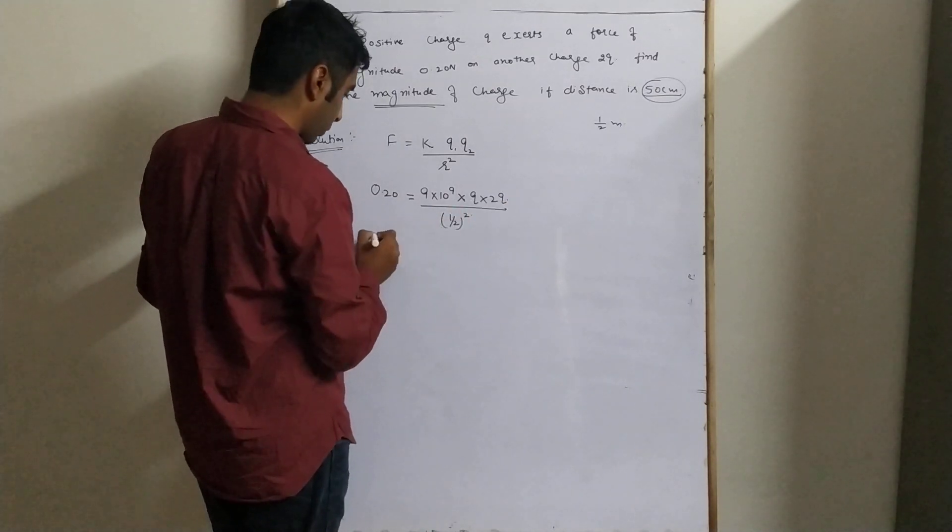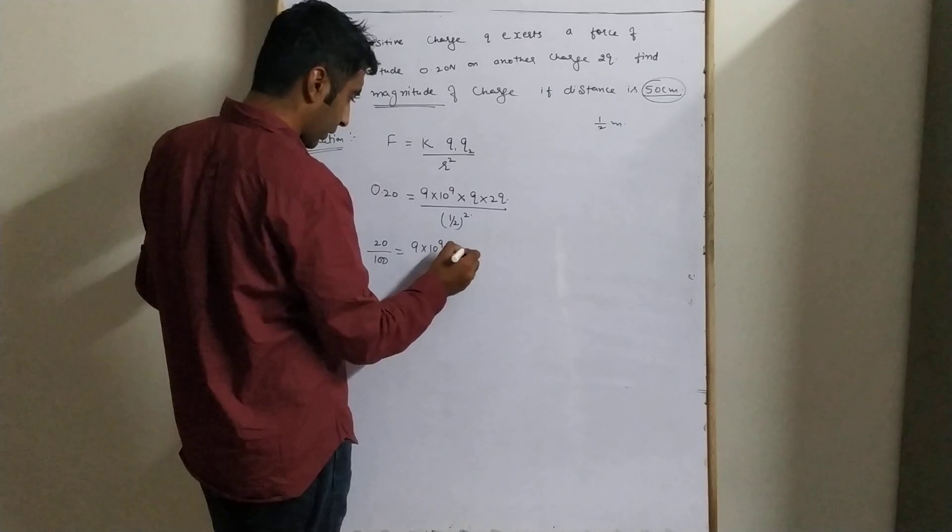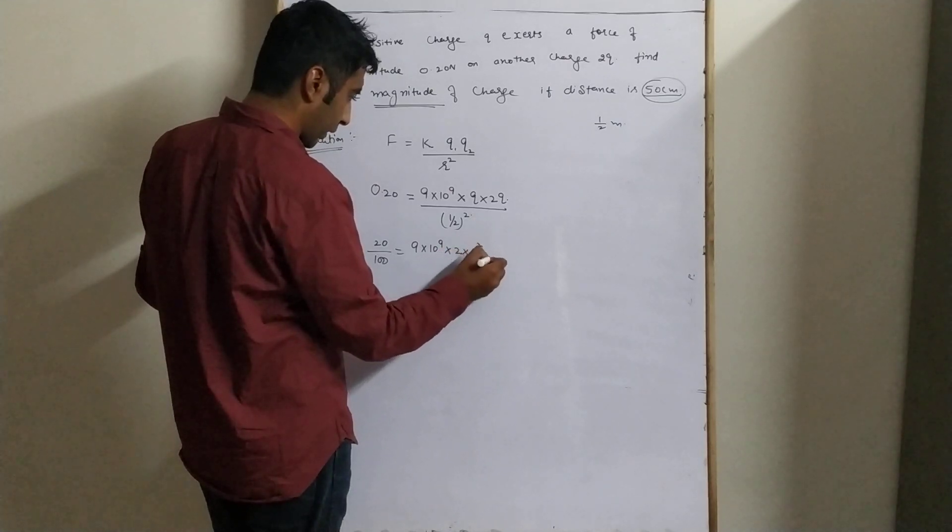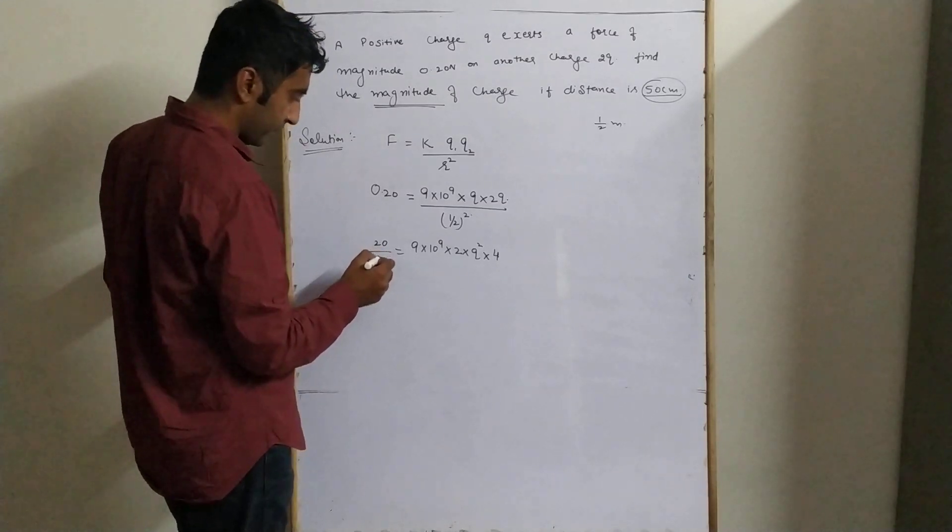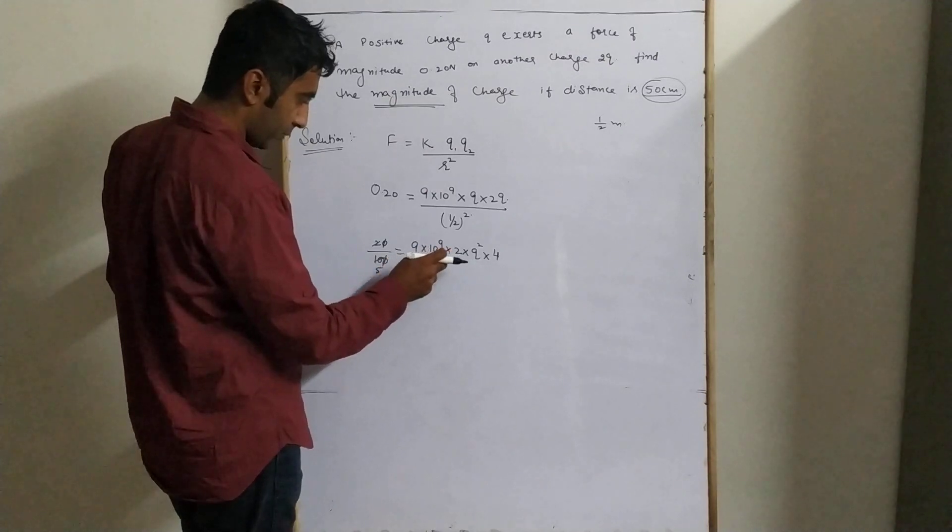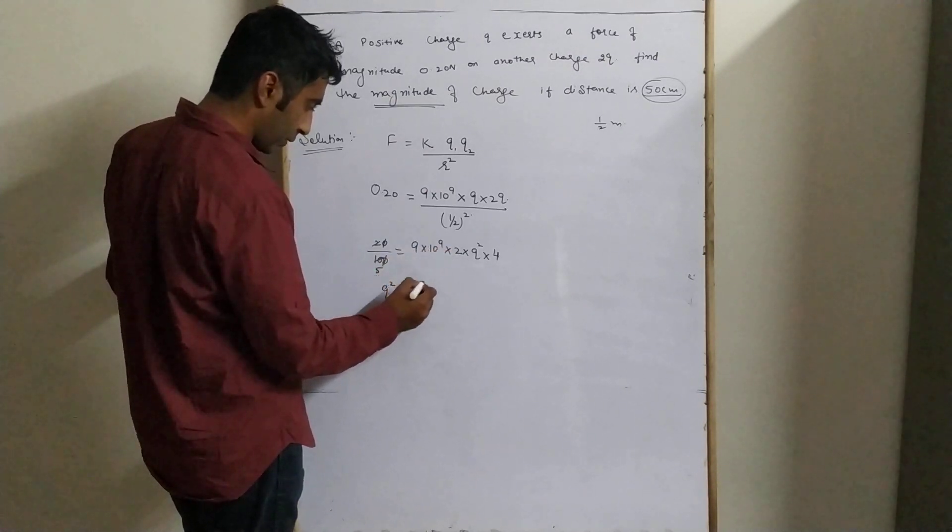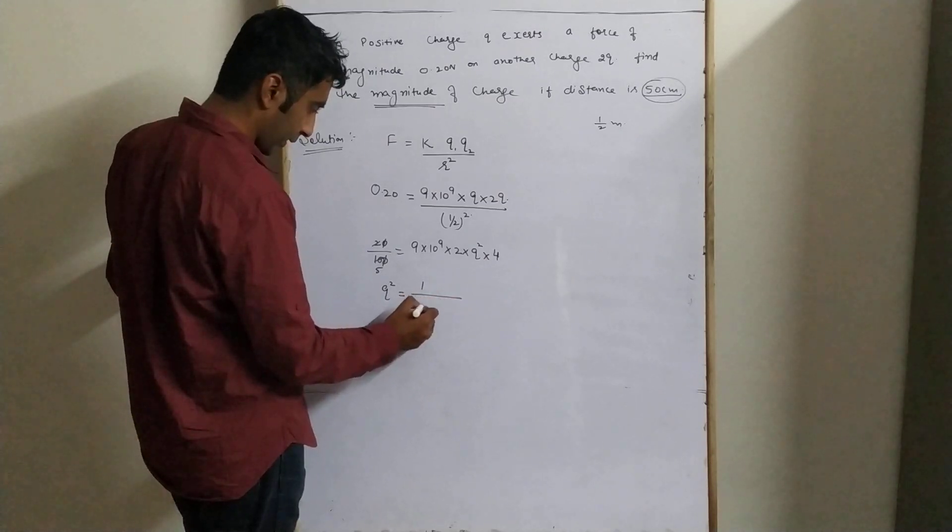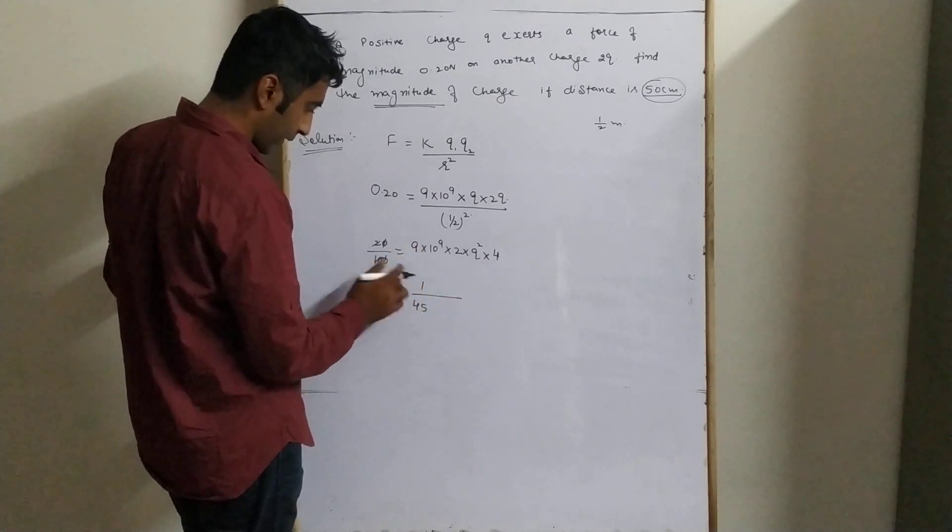So we get 20/100 = 9×10⁹ × 2q² / (1/4). Simplifying: 1/5 = 9×10⁹ × 2q² × 4. Cross multiply to get q² = 1/(9×5×8) = 1/45.